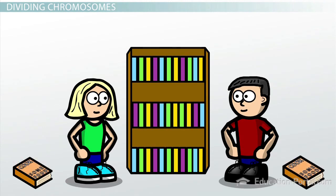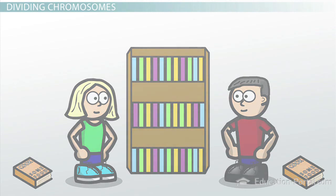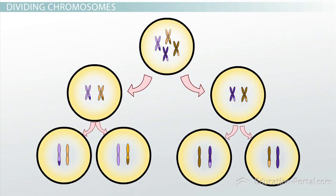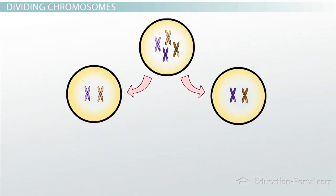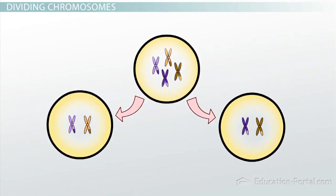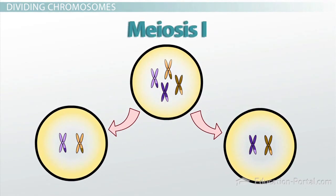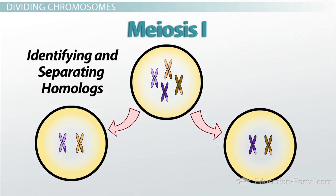This will ensure that neither of us get two editions of the same cookbook or no version at all. This is basically the problem facing a cell undergoing meiosis. Two cell divisions occur during meiosis, and the events of the first meiotic division, meiosis one, address the problem of identifying and separating pairs of homologous chromosomes.